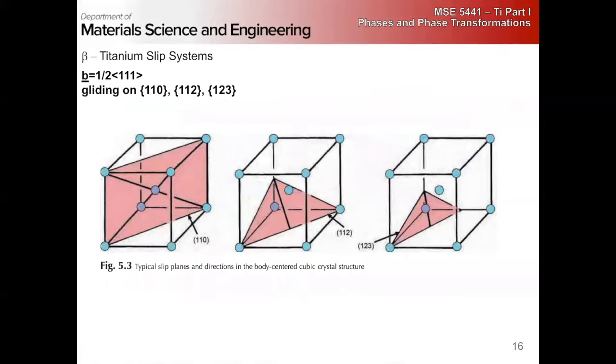In BCC, we have a hodgepodge of slip systems as well. Just like we did for BCC iron. The slip direction is going to be 111. But we can either glide on the 110 plane, the 112, or the 123 type planes. So we have a huge amount of potential slip systems for BCC. And they all have very strong temperature dependencies. So whichever is easiest might be different at different temperatures.